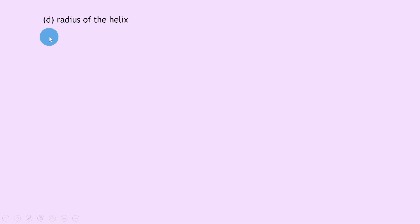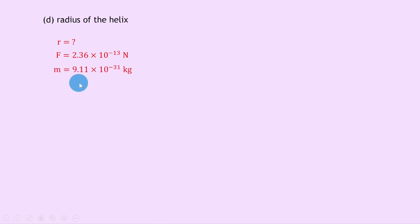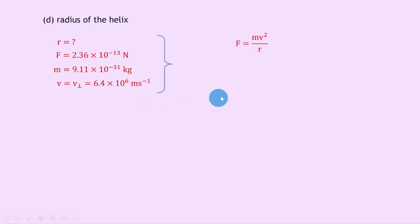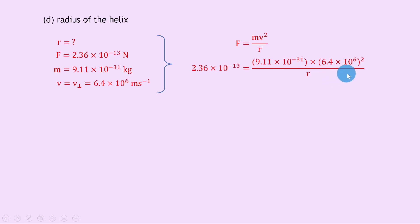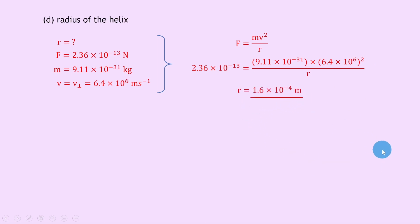Part d: calculate the radius of the helix using f equals mv squared over r. Force f is 2.36e-13 newtons, mass m is 9.11e-31 kilograms, and the perpendicular velocity v is 6.4e6 meters per second. Substituting and cross-multiplying to isolate r, remembering to square the velocity, gives r equals 1.6 times 10 to the minus 4 meters. Note we could also have used r equals mv over qb from the theory video.